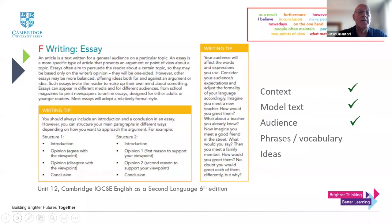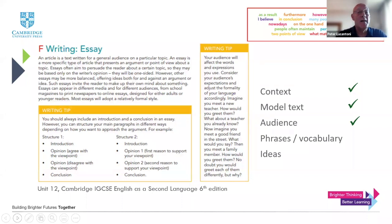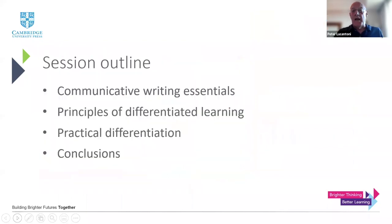Students are provided with ideas they can use in their writing - two speech bubbles, usually opposites taking different sides of an argument. We've got context, model text, audience, phrases and vocabulary, and ideas. If we provide students with these five things, they are much more likely to be able to produce the type of text that we want. All the time before the exam - either the November session or the May/June session - should be about teaching, supporting students, helping them develop the skills they need.